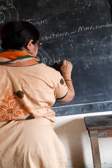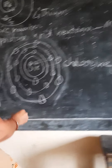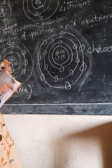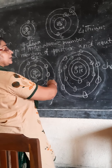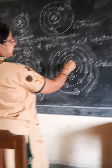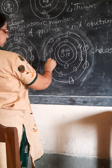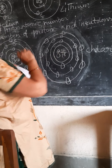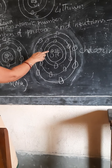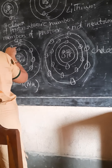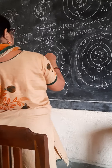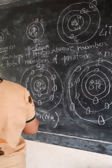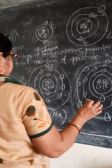Chlorine has 17 protons and 18 neutrons. Electron number — first orbit 2, second orbit 8, and last orbit 7. Proton: 17. Proton is positively charged. Electron is negatively charged. Proton number is the atomic number. Neutron is charge-less. Proton and neutron total number is the mass number. Proton and electron number are the same.